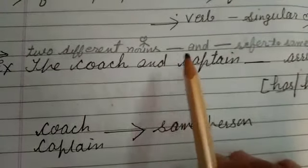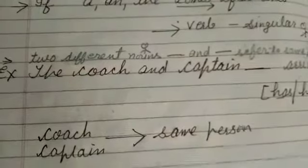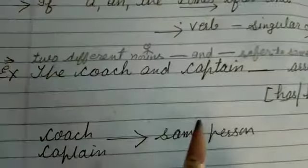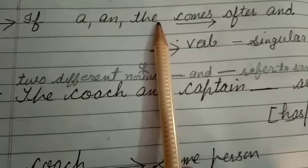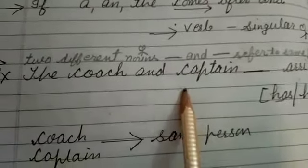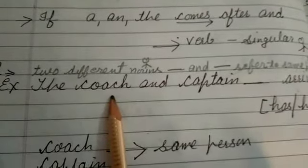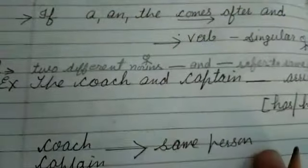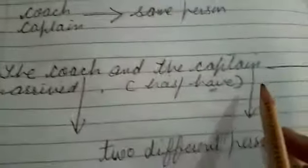Now you might ask how to tell if they are two different persons or the same person. The solution: look after 'and' — if you see an article (a, an, or the) before the second noun, that means the two subjects refer to two different persons. For example: 'The coach and the captain __ arrived.' Here 'the' appears before both nouns.